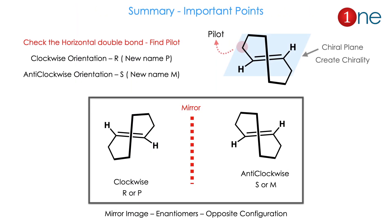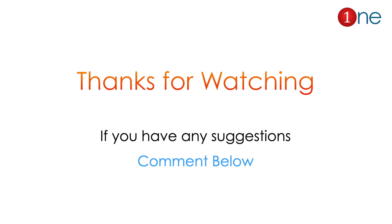Let us summarize. First and most importantly, check that the double bond is horizontal and find the pilot atom — the atom above the plane of the double bond. Then give the numbering. Clockwise means R, new name P; anti-clockwise means S, new name M. Mirror images always have opposite configuration. That's all from this video — I hope it was useful. If you have any suggestions, comment below. If you liked the video, please subscribe and share.